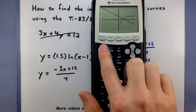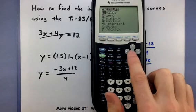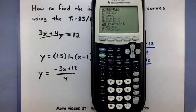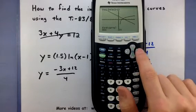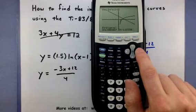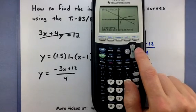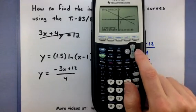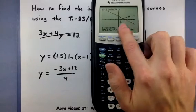I'm going to press 2nd and then calc and select option number 5 which says intersect. Enter. Now if you move your little arrows over, your little blinking cursor shows up on one of the curves. Right now it's on my little logarithm right here.